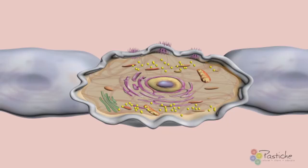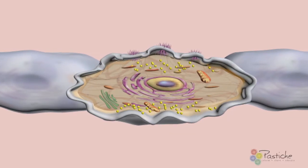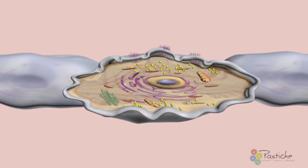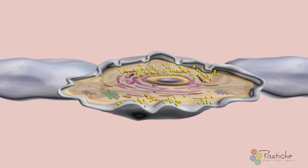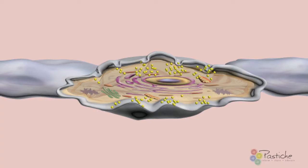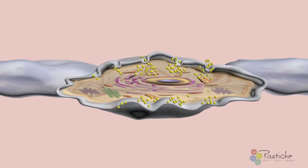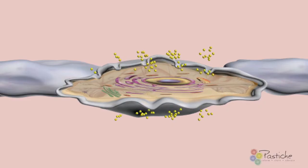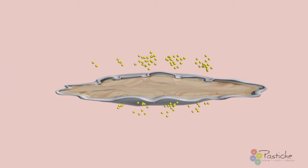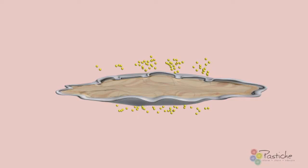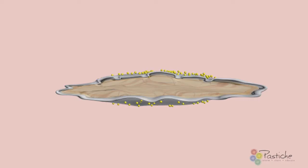Keratinocytes are programmed to undergo an event called terminal differentiation, and this event is a type of controlled, programmed journey, which slowly takes place as the keratinocyte moves up through all layers of the epidermis to the stratum corneum. During this differentiation cycle, the keratinocyte makes multiple changes in both its appearance and function, whilst forming the many lines of skin barrier defense of the epidermis.